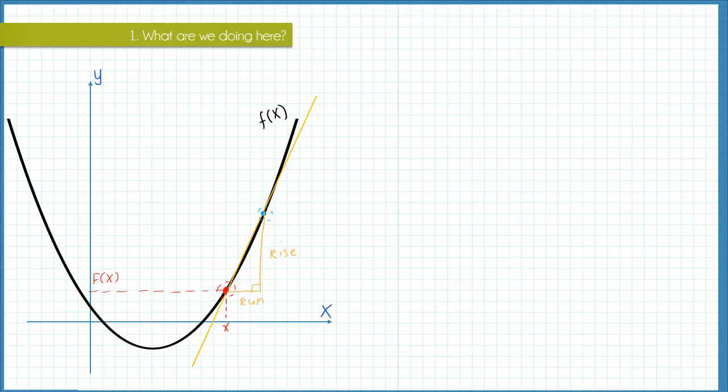What I will do is I'm just going to say that the run has a length h. That means that the x-coordinate of my blue point here is going to be x plus h, and the y-coordinate is just the output when the input is x plus h, which would just be f of x plus h.